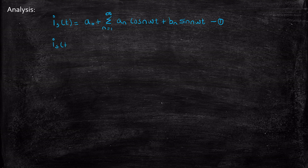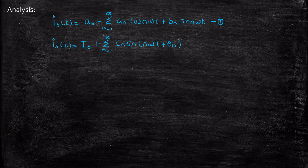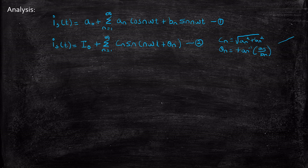This Is(t) can be rewritten where A0 is the DC component. Plus summation of n equal to 1 to infinity, we have Cn sin(n·omega·t + theta_n). We can rewrite equation 1 in this fashion — call this equation 2 — where Cn equals square root of An² plus Bn², and theta_n equals tan inverse of An by Bn. Consider a triangle with sides theta_n, An, Bn, and Cn.